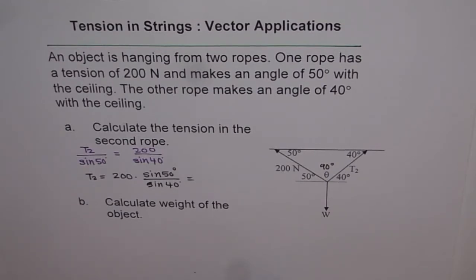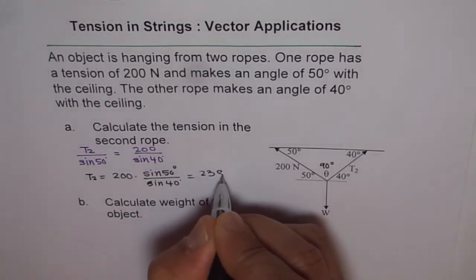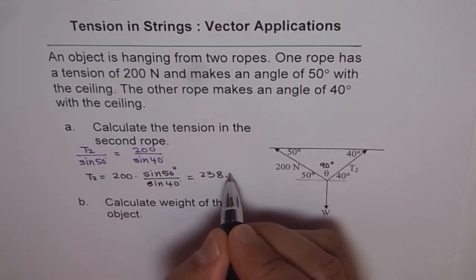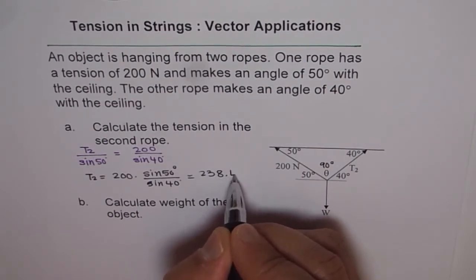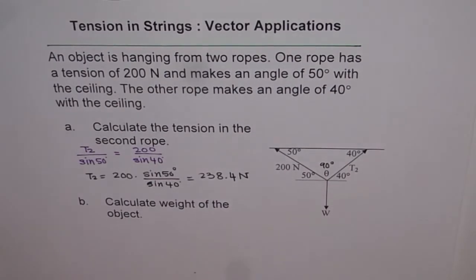We get 238.35, rounding to 238.4 newtons. That is T2 in newtons. We get our force T2 in newtons.